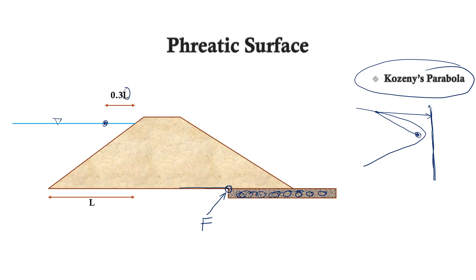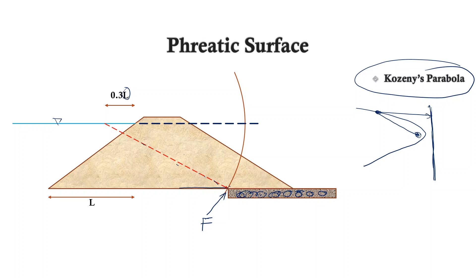Since one of the points on the parabola is known, we can measure its distance from the focus. We then draw an arc taking that point as center with that whole length as radius. When we draw this arc and extend the water surface, it intersects at a point from which we draw a vertical line — this vertical line is the directrix, at the same distance from the known point as the distance to the focus. Based on this, we can draw a complete parabola with the vertex midway between the focus and the directrix.